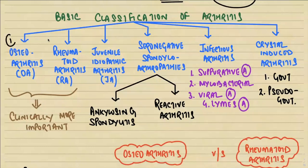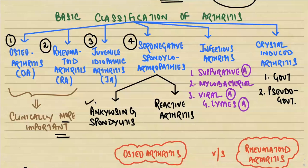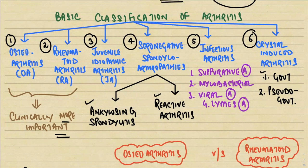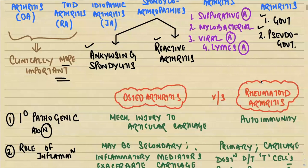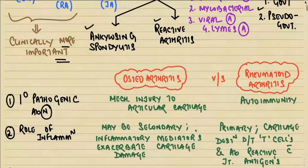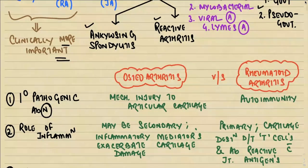The basic classification includes number one: osteoarthritis; number two: rheumatoid arthritis. Clinically, osteoarthritis and rheumatoid arthritis are the more important varieties. Other types include juvenile idiopathic arthritis, seronegative spondyloarthropathies including ankylosing spondylitis and reactive arthritis, infectious arthritis including suppurative, mycobacterial, viral arthritis, and Lyme's disease, and lastly crystal-induced arthritis including gout and pseudogout.